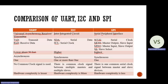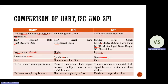The fourth point is related to mode of communication. UART uses asynchronous mode, meaning no common clock is shared — different clock pulses are applied to master and slave. I2C and SPI use synchronous mode, where a common clock pulse is applied to both the master and slave devices.